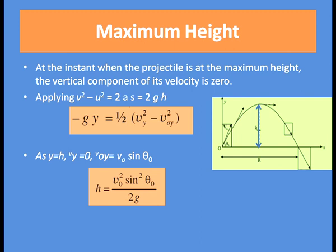Now let us calculate the maximum height. Applying the equation of motion v² − u² = 2as, where the distance covered is the height h and a equals g, the equation becomes: −g·y = ½·(Vy² − Voy²), where Vy is the final velocity and acceleration is minus g.